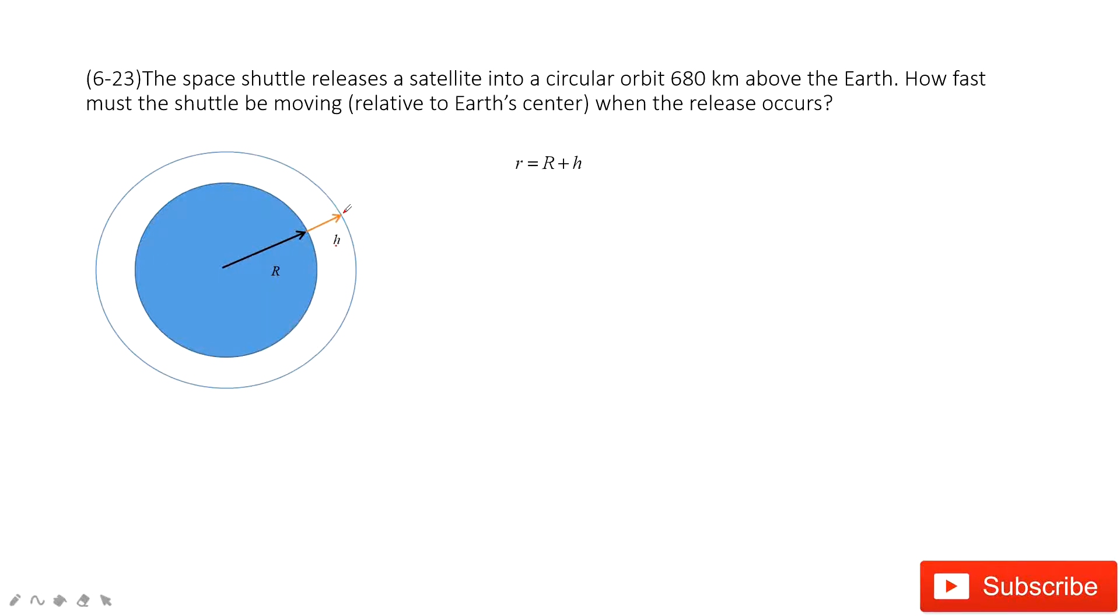We need to consider for the circular motion, the net force comes from the gravitational force, right? So this gravitational force equals the mass times acceleration. This acceleration is the centripetal acceleration, v squared divided by r.